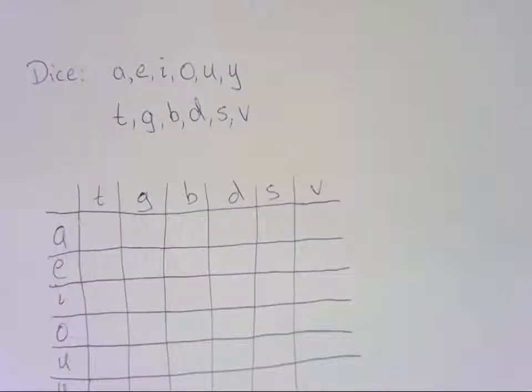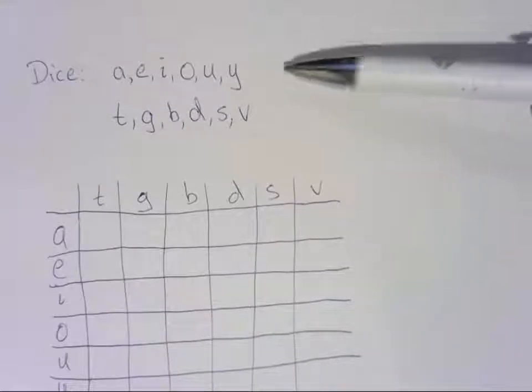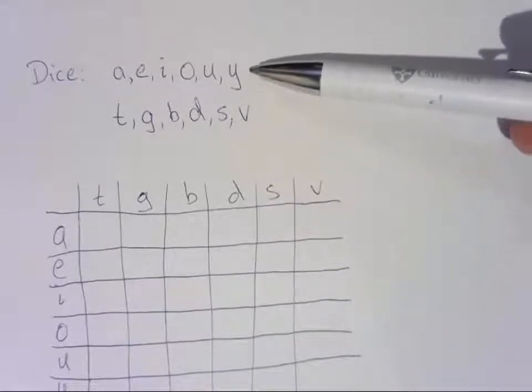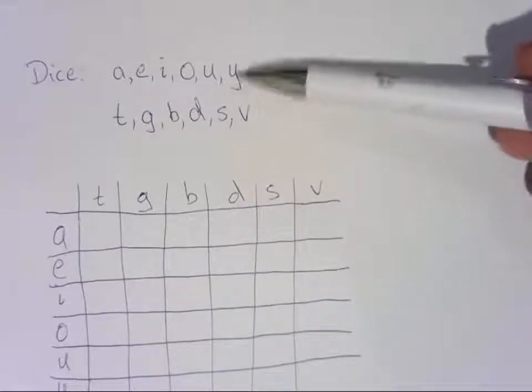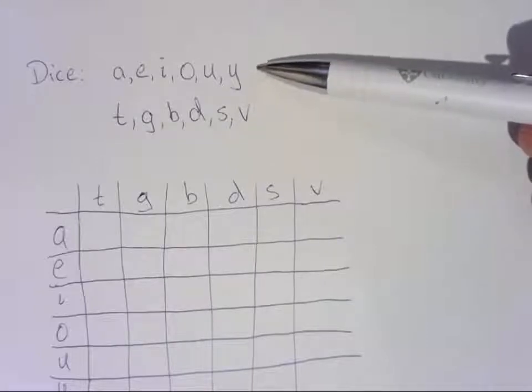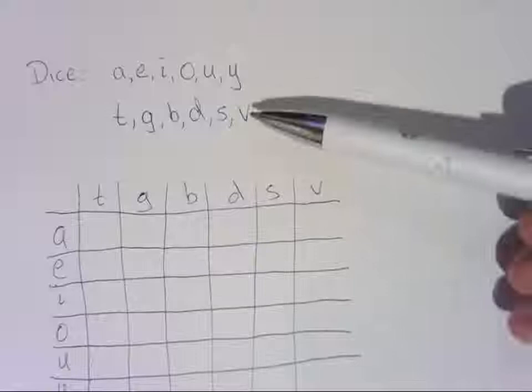Alright, let's take a look at a probability problem. What we're going to be doing is looking at rolling two dice. The first dice has the vowels, which we're going to include Y. The vowels A, E, I, O, U, and Y. So it's a six-sided dice, just like a regular one, but with letters on it.